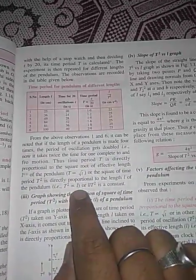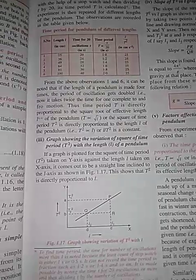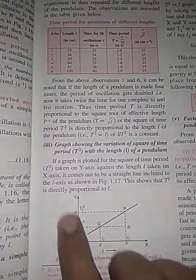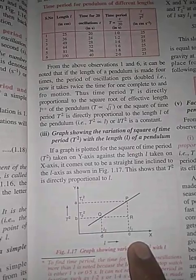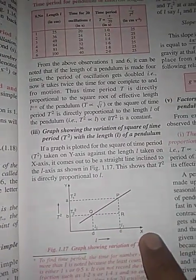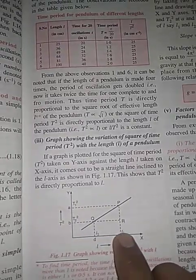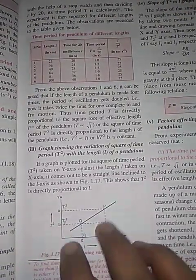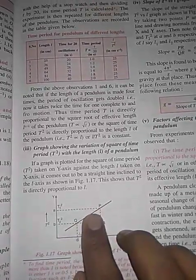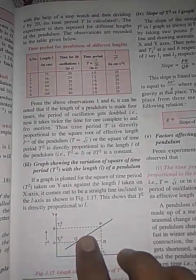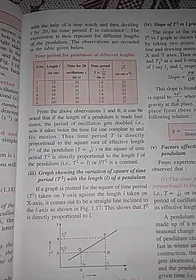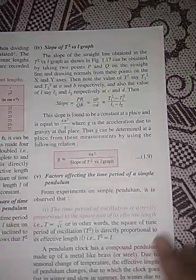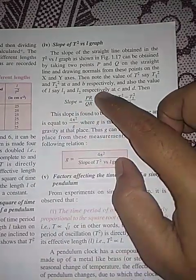This can also be written as T² is directly proportional to L. With this expression they have plotted a graph — which is very important for exams. On the Y-axis is T² and on the X-axis is the length of the pendulum. When length is L1, T1² is A; when length is L2, T2² is B. This line indicates the relationship between length L and time period T.